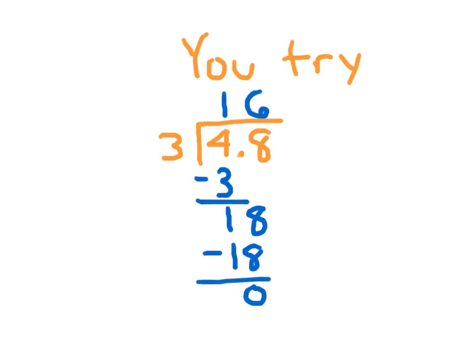At that point, since there is one decimal point within my answer, and I'm dividing by a whole number with no decimal points, then I count from right to left one place, because of this right here. So it's 1.6. 4 and 8 tenths divided by 3 is 1 and 6 tenths.